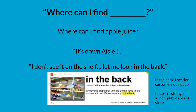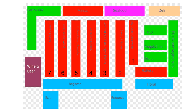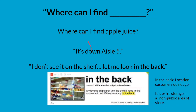Here is a good phrase to know: 'Where can I find ___?' You can walk up to an employee and ask them, 'Where can I find apple juice?' Now they might respond, for example, 'It's down aisle five.' The word 'down' in this common phrase just means you can find it in aisle five — in English we commonly use the word 'down' in this context.